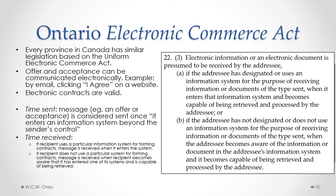When is an electronic message received? If the person you're sending the message to uses a particular information system for forming contracts — for example, an e-commerce website — then the message is deemed to be received when it enters that system. So when you press a button saying 'I agree to this contract,' and that electronic signal leaves your computer and enters that e-commerce website, that is the time the offer or acceptance is deemed to be received.